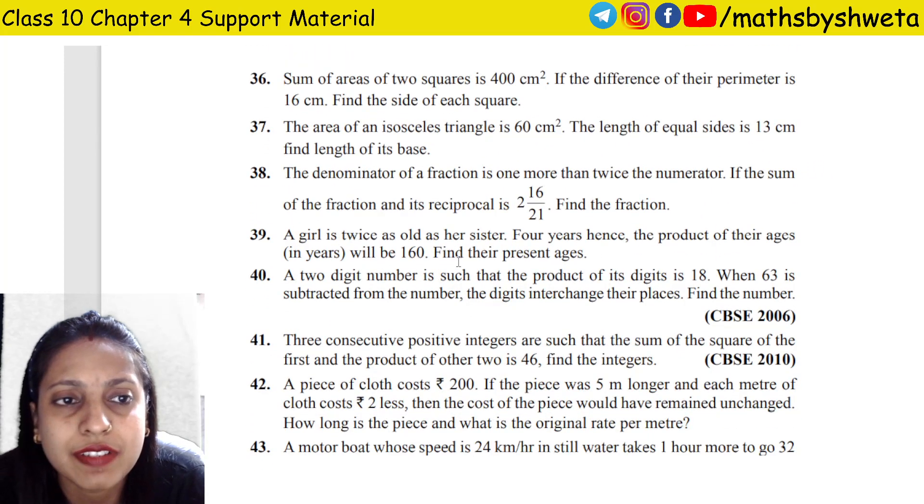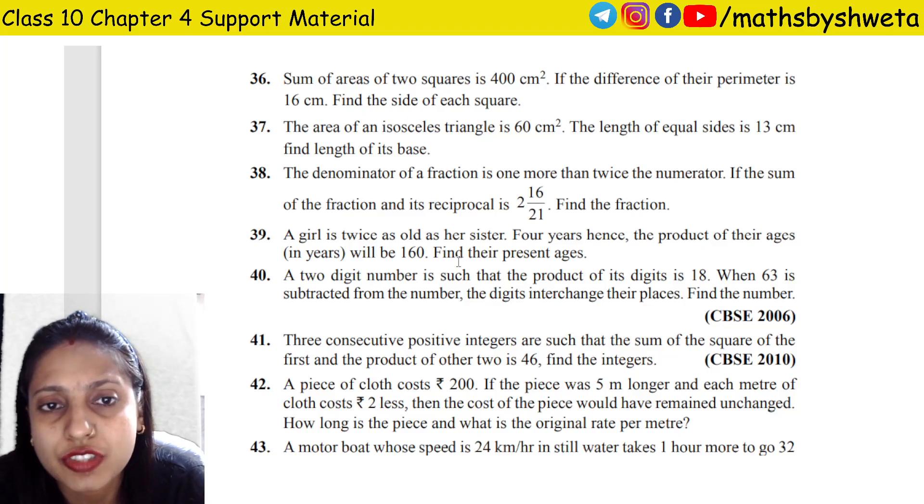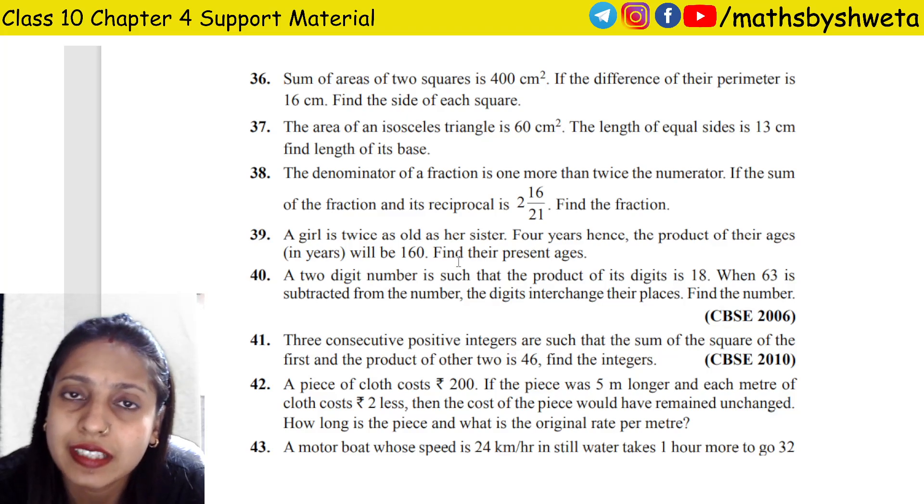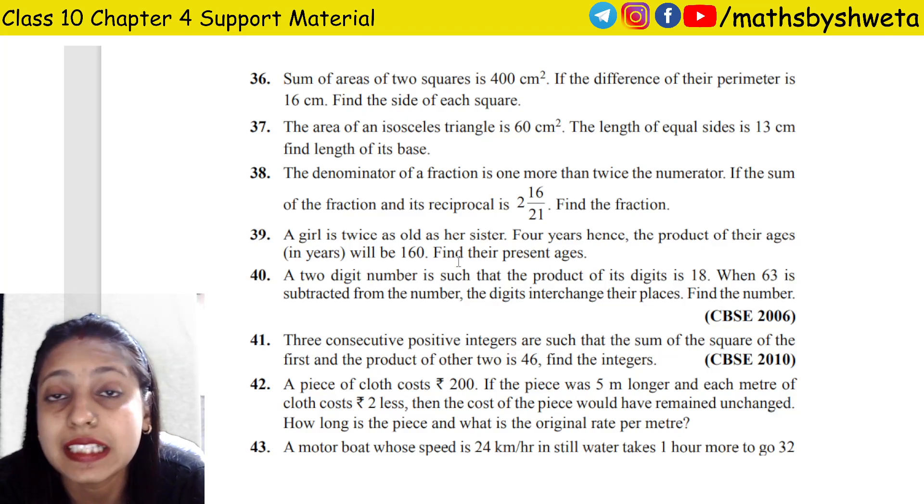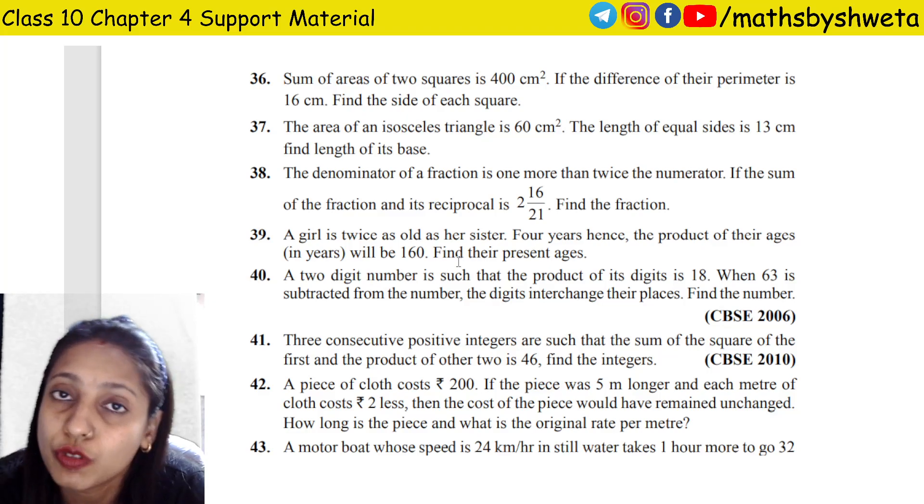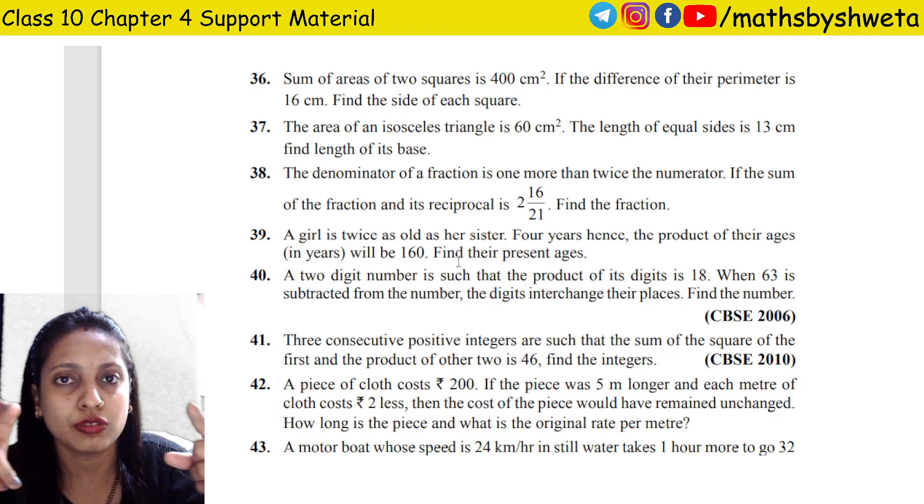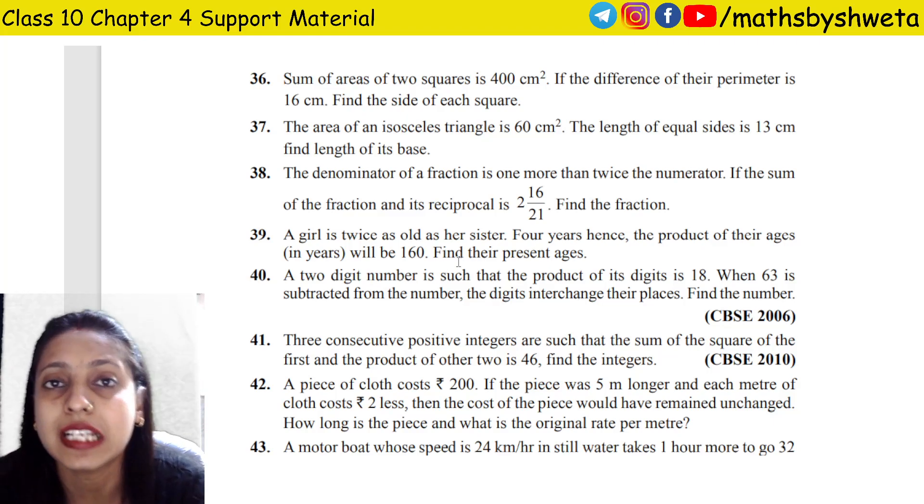Question number 37: The area of an isosceles triangle is 60 cm square. The length of equal sides is 13 cm. Find length of its base. You have an isosceles triangle where two sides are the same, 13 and 13, so we need to find the base.